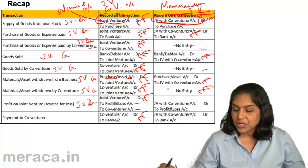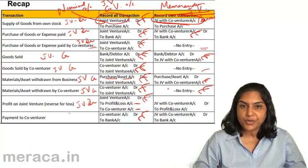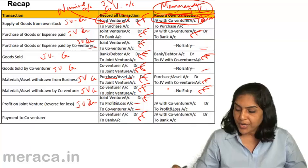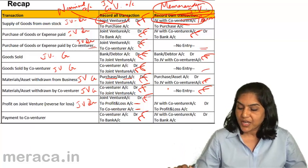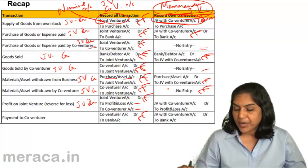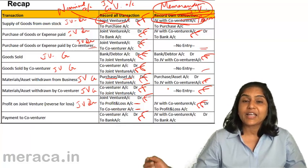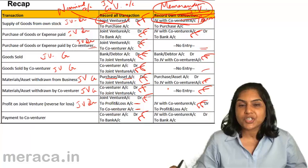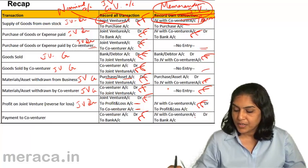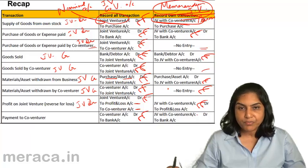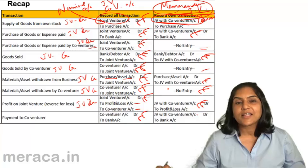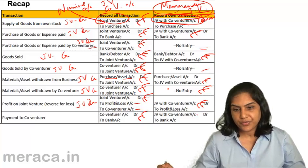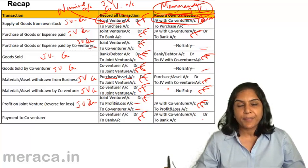Profit on joint venture is determined by preparing the memorandum joint venture account. If there is a profit, the entry is: Joint Venture with Co-venturer Account debit to Profit and Loss Account. But if it is a loss, Aakash debits his Profit and Loss Account and credits the Joint Venture with Co-venturer Account. The balance in the Joint Venture with Co-venturer Account represents the amount to be received or paid to the co-venturer: Joint Venture with Co-venturer Account debit to Bank.